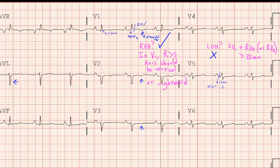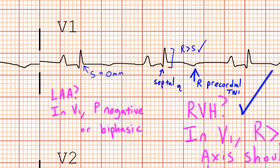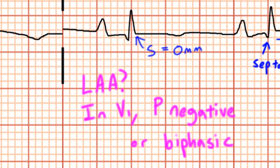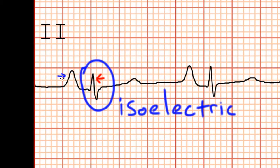Now let's look for signs of left atrial abnormality. For left atrial abnormality, we look in lead V1 for a P-wave that's negative or biphasic. Looking here in V1, we can see that this P-wave is generally pretty positive, and if there's any negative deflection at the end, it's pretty small — definitely not more than one small box in area under the curve. We can also eyeball lead 2 and see that these P-waves are not broad, so we don't have any signs of left atrial abnormality here.